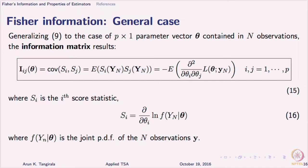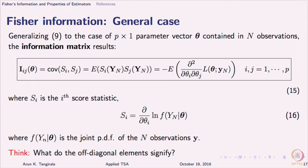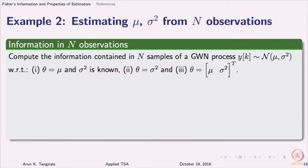The score function is the partial derivative with respect to the ith parameter of the log likelihood function. Let us understand this through an example. We will move from a single observation to n observations, which is the general problem that we encounter. Now we want to ask: what is the information contained about mu?